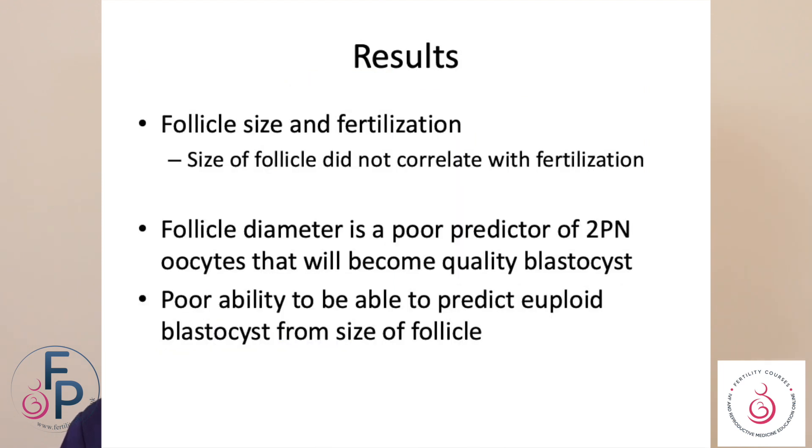What did the study tell us? Follicle size did not have much relationship in predicting fertilization. It is also a poor predictor of which 2PN oocytes become blastocysts, and almost equally a poor predictor of being able to predict euploidy of the embryo based on follicle size. So follicle size in general has its limitations in terms of what you can predict.